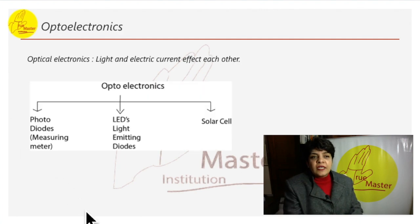Optoelectronic is the study and application of electronic devices and light. Light and electric current affect each other. In optoelectronics we are going to study mainly three devices which is photodiodes, LEDs and solar cell.